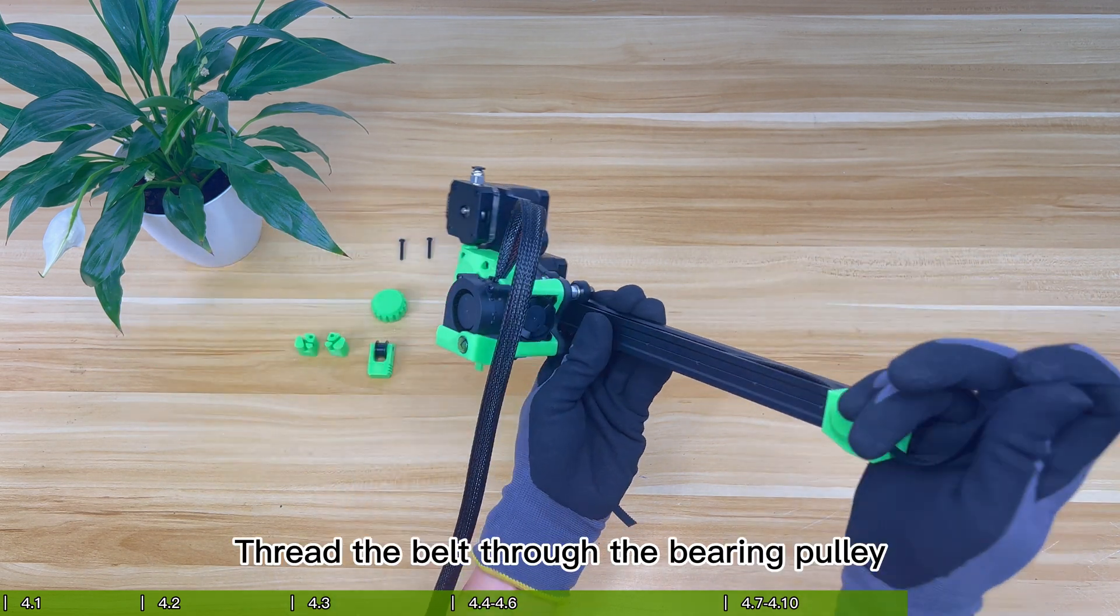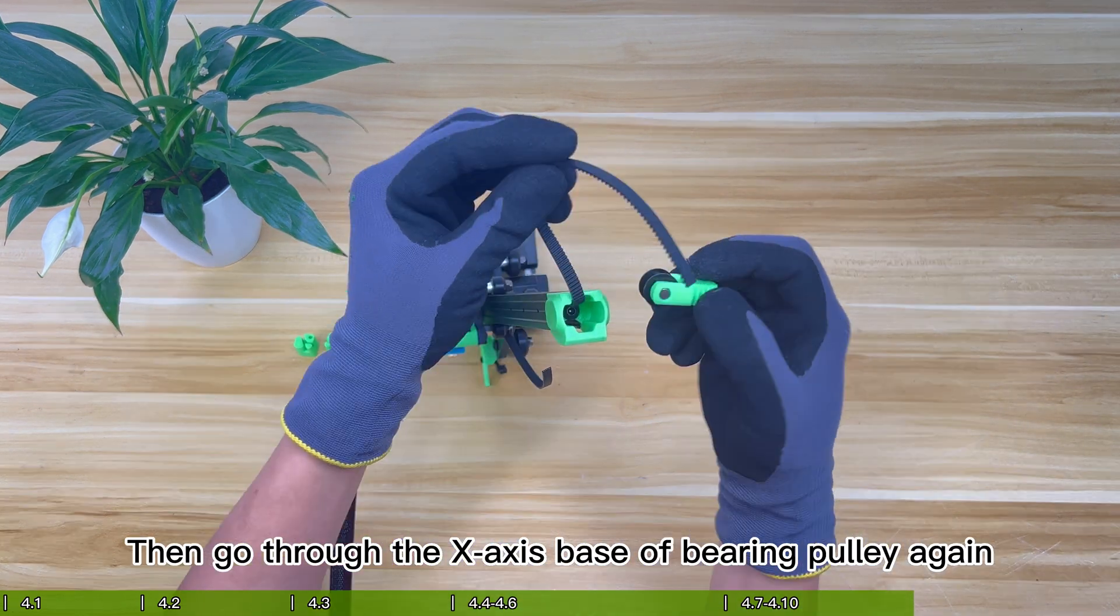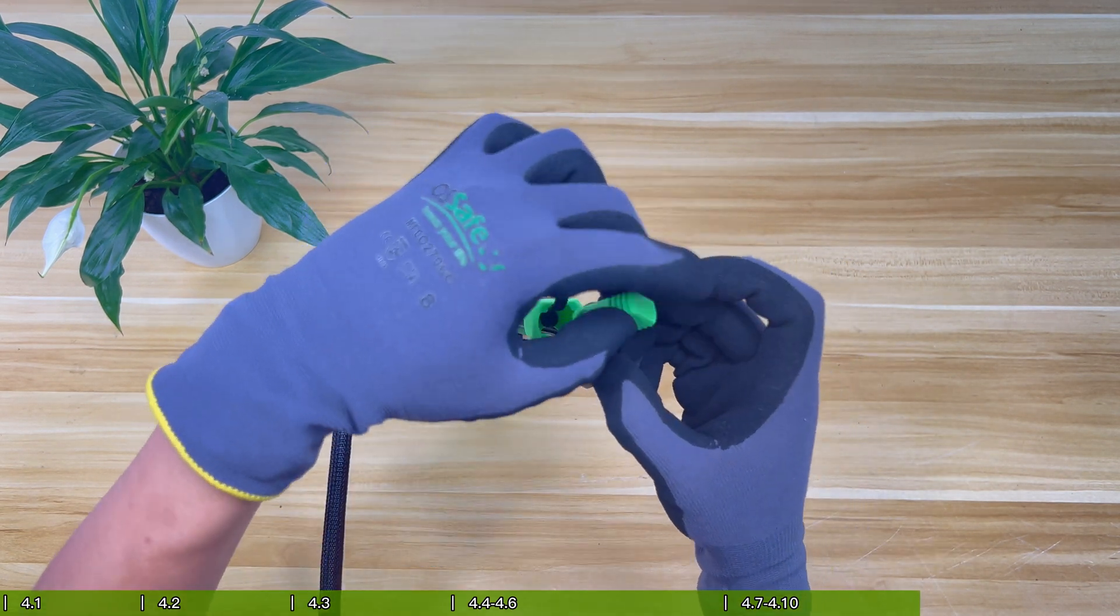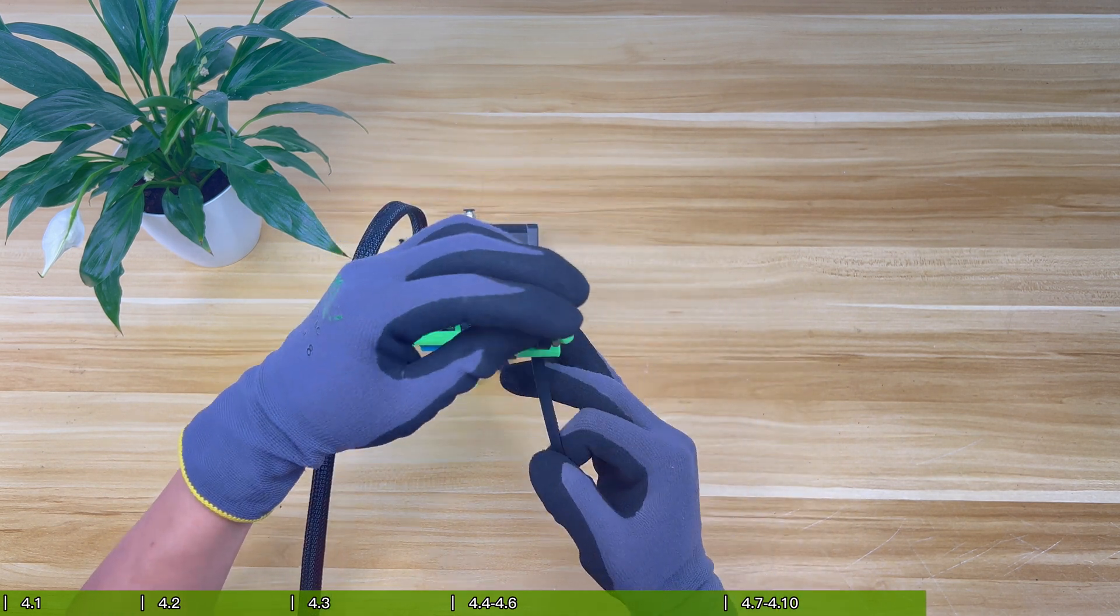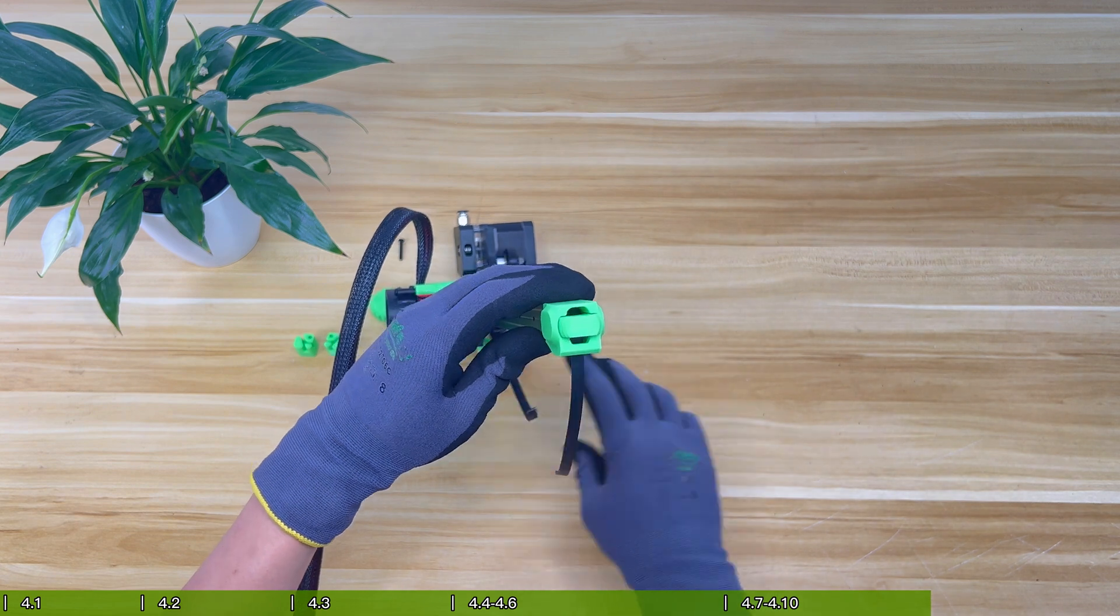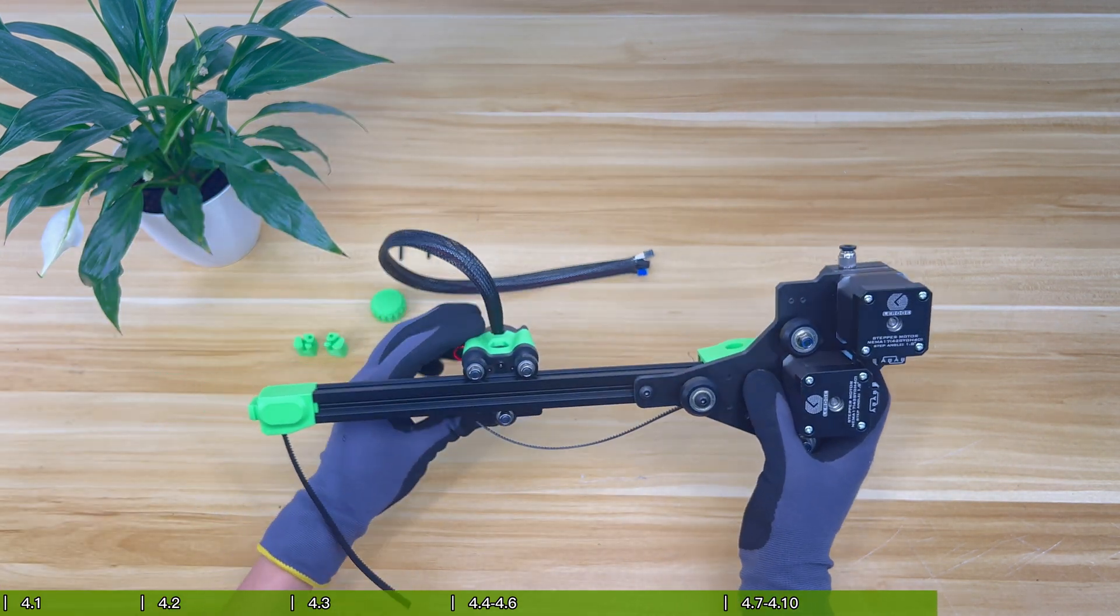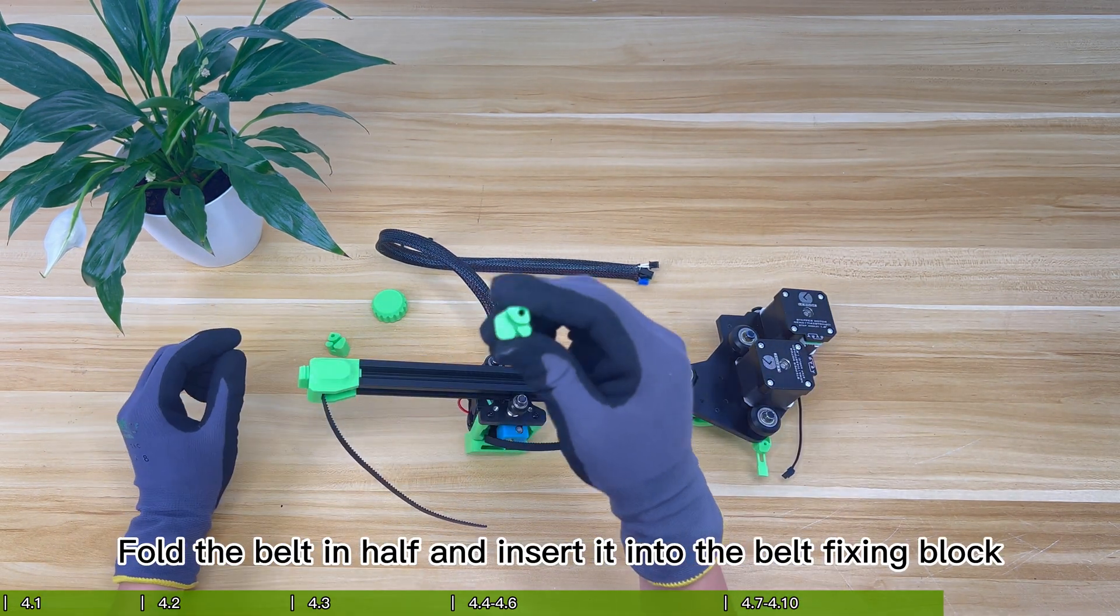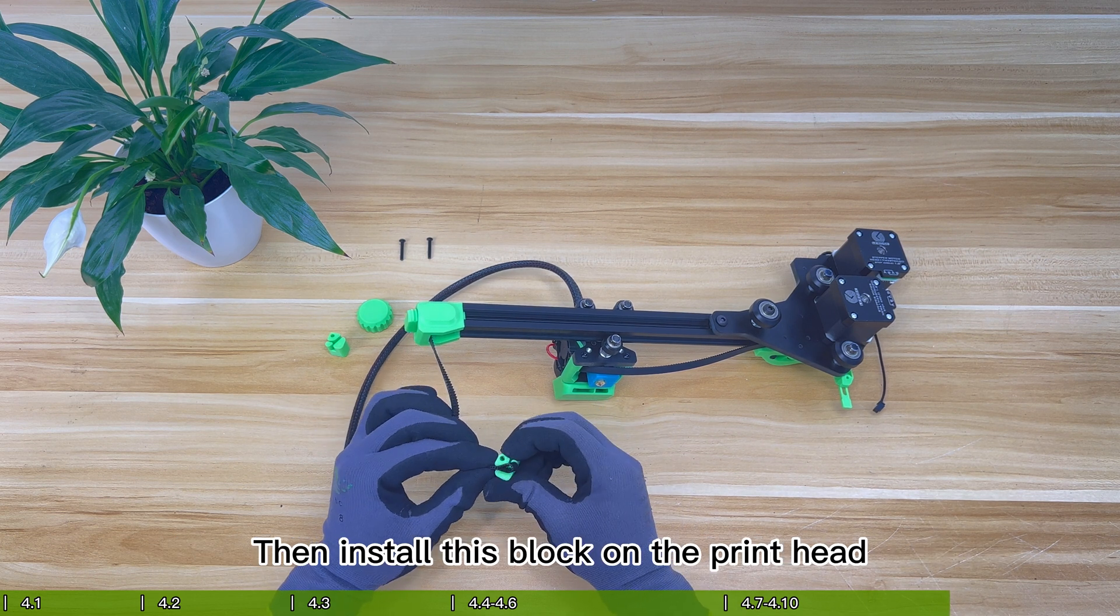Fix this base. Thread the belt through the bearing pulley. Then go through the X-axis base of bearing pulley again and pass from below. Fold the belt in half and insert it into the belt fixing block. Then install this block on the printhead.